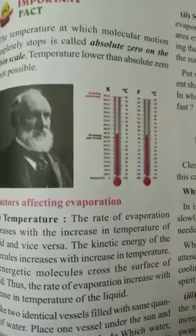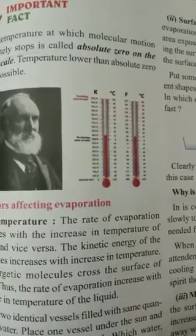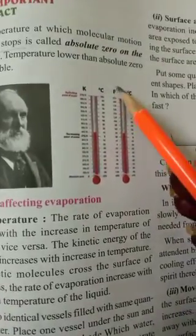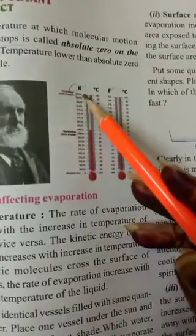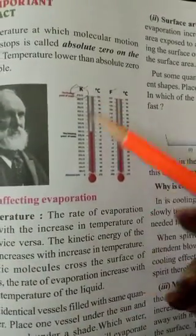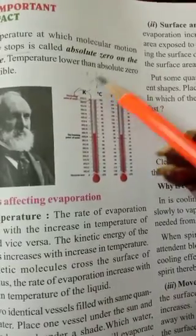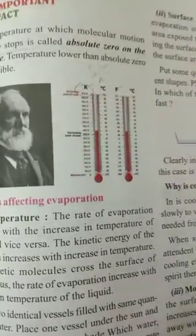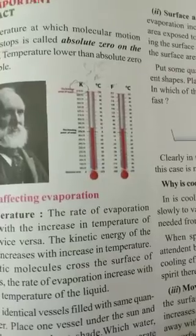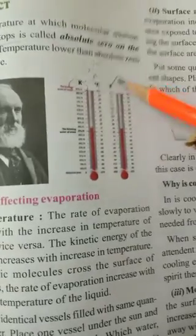In 7th class we use thermometers to measure temperature. There are three types of thermometer: Celsius, Fahrenheit and Kelvin. Normal body temperature is 37 degrees Celsius. If it is more or less than that, it means we have a fever or something is wrong with our body. The same in Fahrenheit is 98.6 degrees, which is our normal temperature.